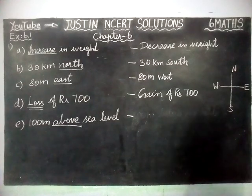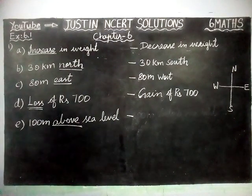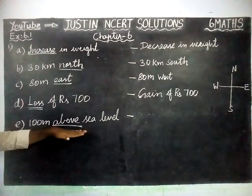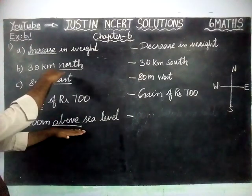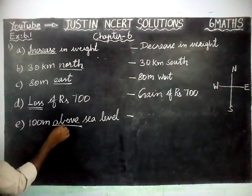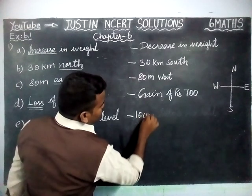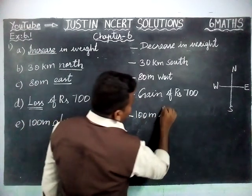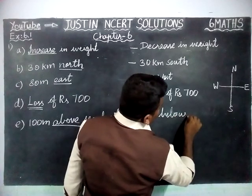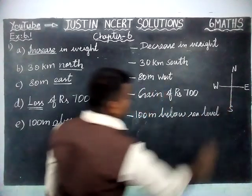Part E: 10 metres above sea level. The key word here is above. The opposite of above is below. So the answer is: 10 metres below sea level.